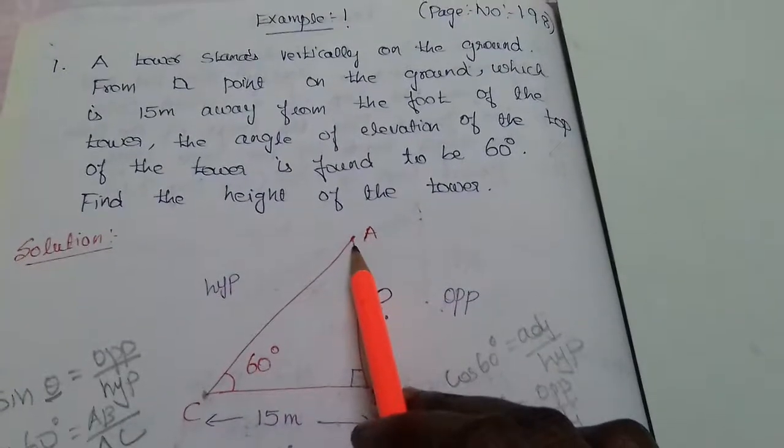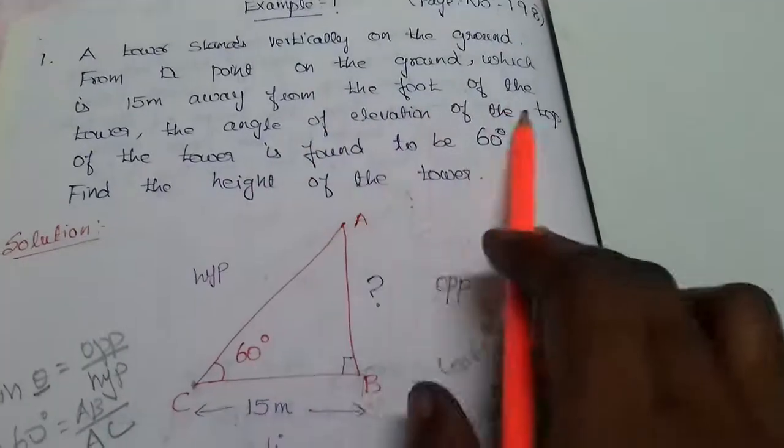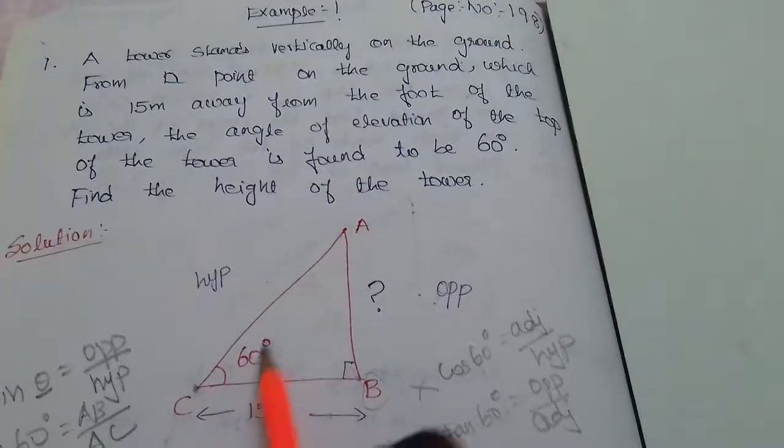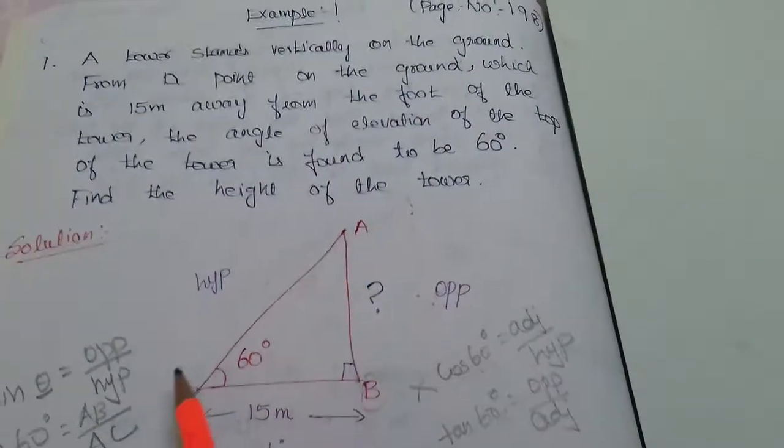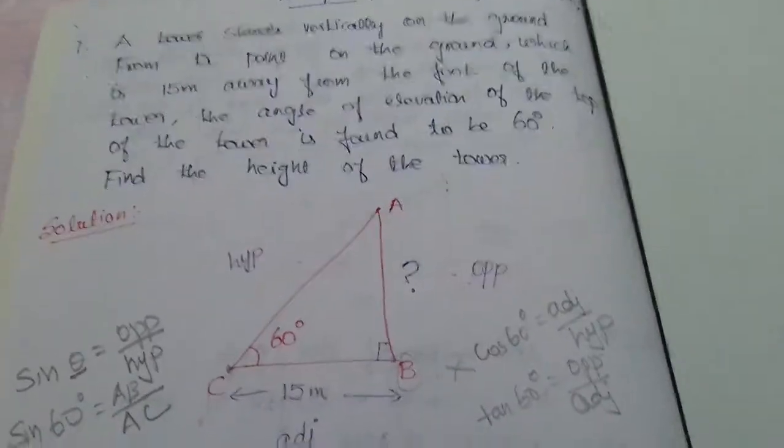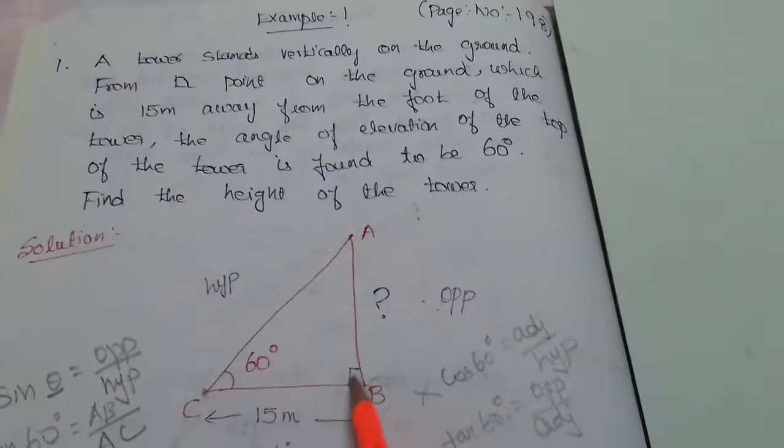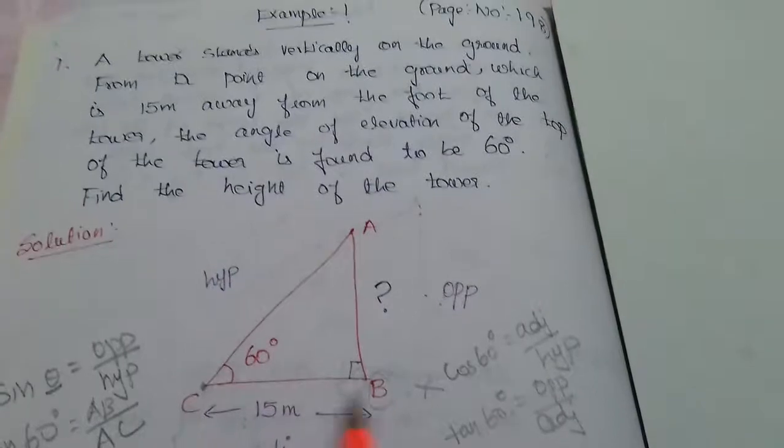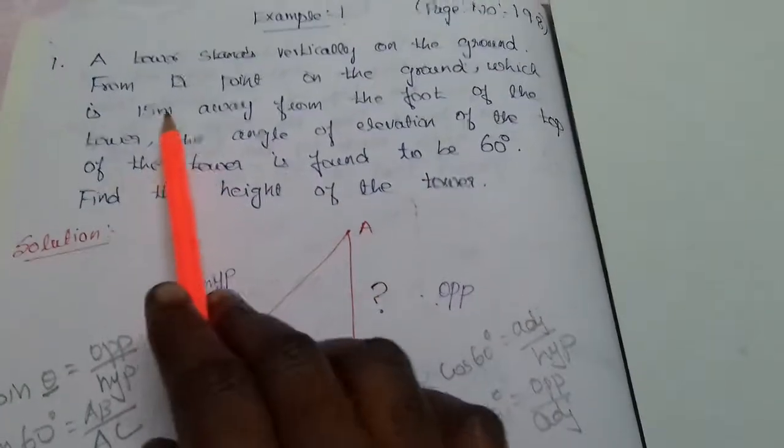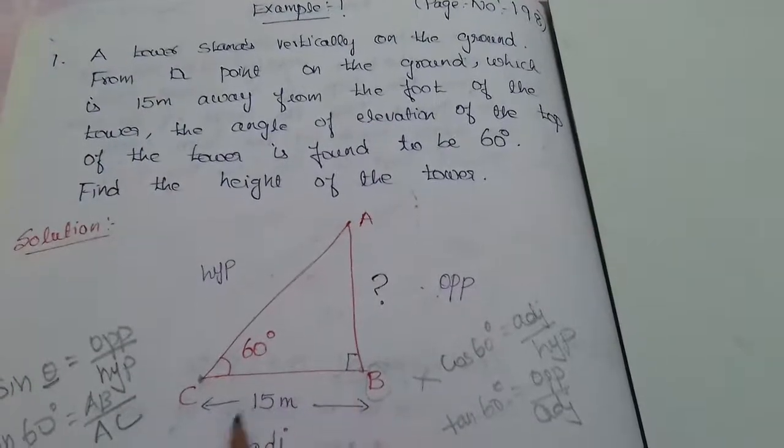The angle of elevation of the top of the tower is found to be 60 degrees. So at the point, the top of the tower is 60 degrees. C is one point on the ground. B is the foot of the tower. This distance is 15 meters away from the foot of the tower. So this distance is 15 meters.